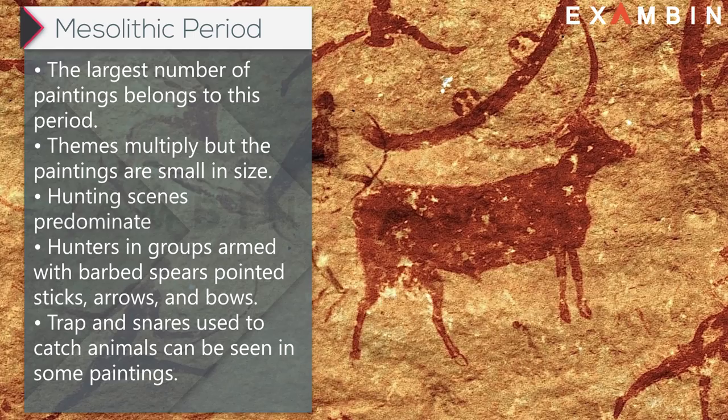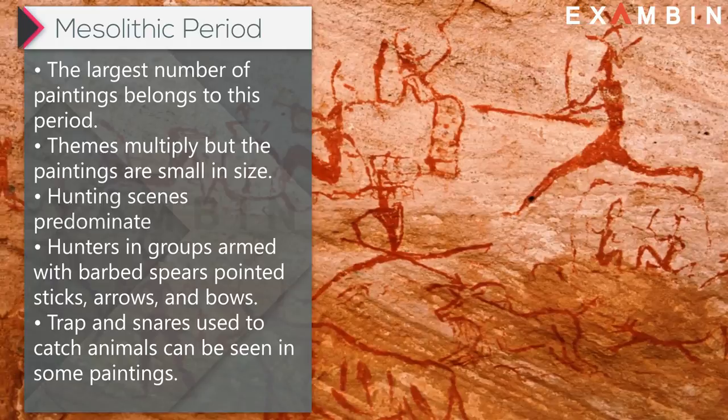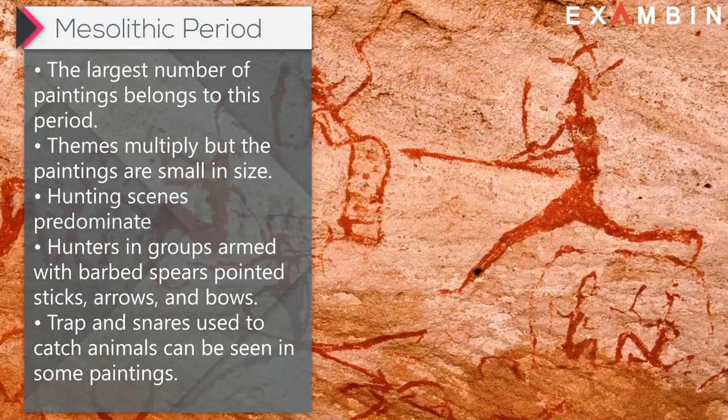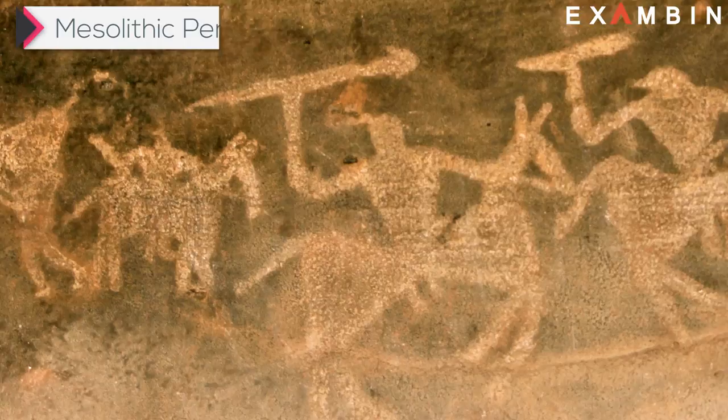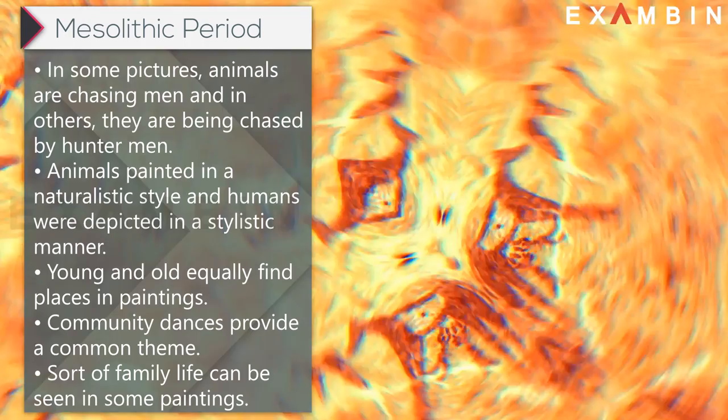Mesolithic period art: the largest number of paintings belongs to this period. Themes multiply but the paintings are small in size. Hunting scenes predominated — hunters in groups armed with barbed spears, pointed sticks, arrows and bows. Traps and snares used to catch animals can be seen in some paintings. In some pictures, animals are chasing men, and in others, they are being chased by hunters.